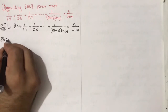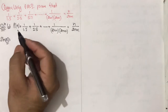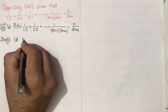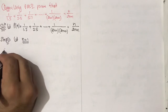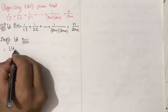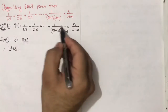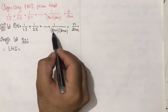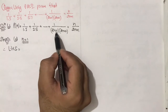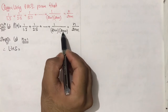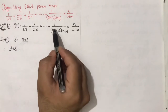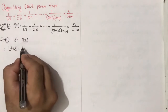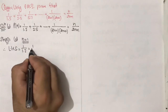Step 1: We have to show that P(1) is true. Let n = 1. Therefore LHS of P(n): put n = 1, we get 1/(2×1 − 1)(2×1 + 1) = 1/(1×3) = 1/3. This is the first term.